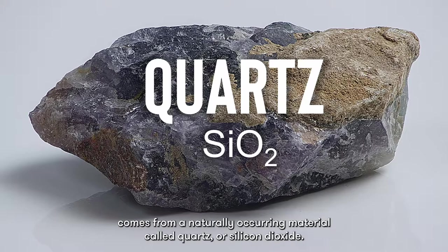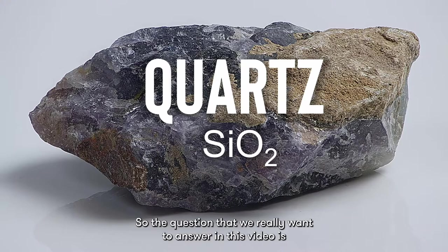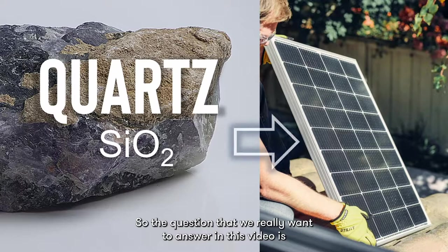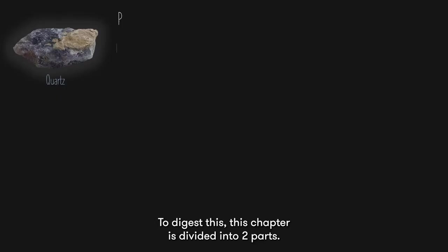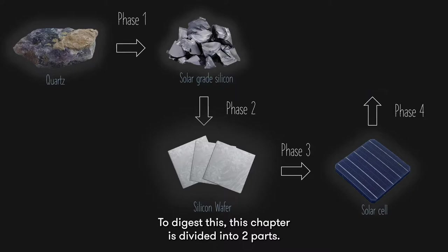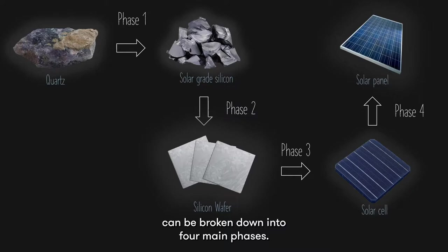The most basic raw material of silicon solar panels comes from a naturally occurring material called quartz, or silicon dioxide. The question we really want to answer in this video is how are we going to turn quartz into a commercial solar panel? To digest this, this chapter is divided into two parts.